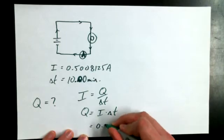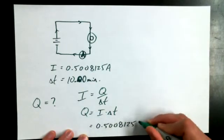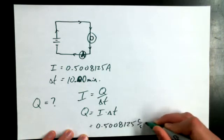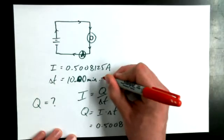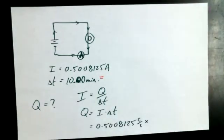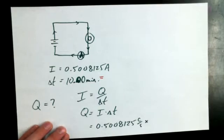So I could say 0.5008125 coulombs per second times... but what should I have done already? Converted from minutes to seconds. I'm going to put that in red so we never forget — it has to be converted into standard units.